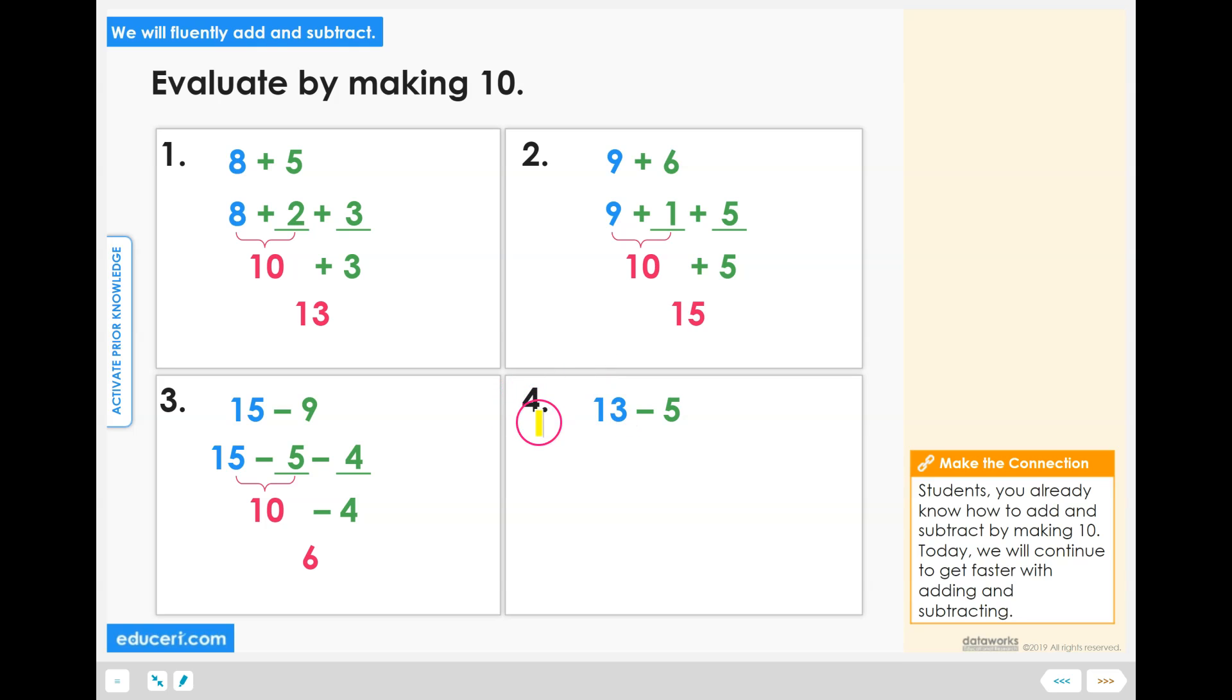Complete the subtraction problem in number 4: 13 minus 5. To turn 13 into 10, we first need to subtract 3 from 13, which means we're splitting the subtraction of 5 into subtract 3 and subtract 2. So 13 minus 3 equals 10, and 10 minus 2 more equals 8.